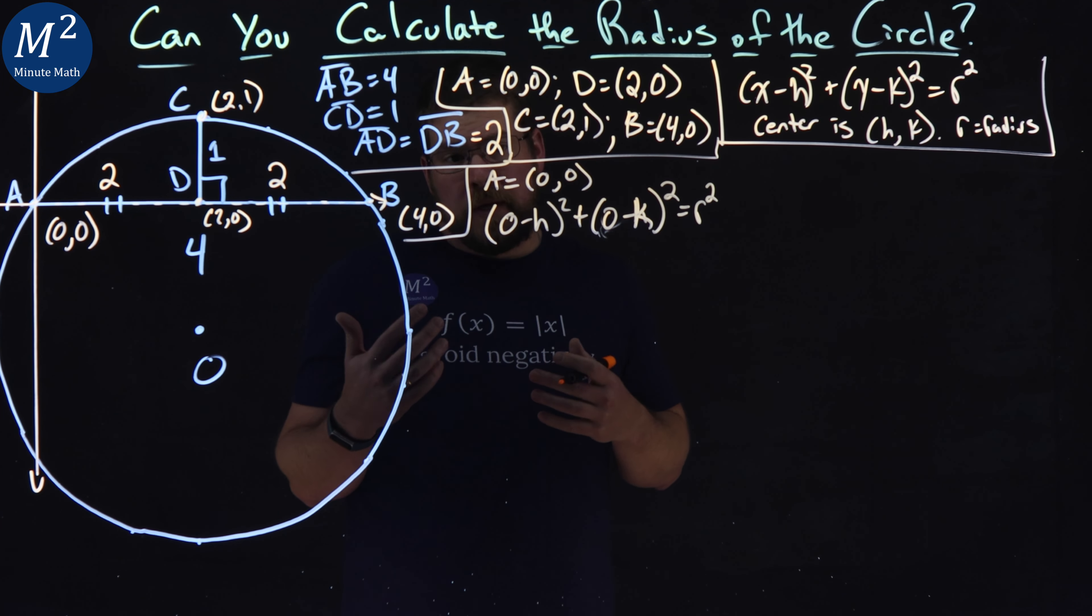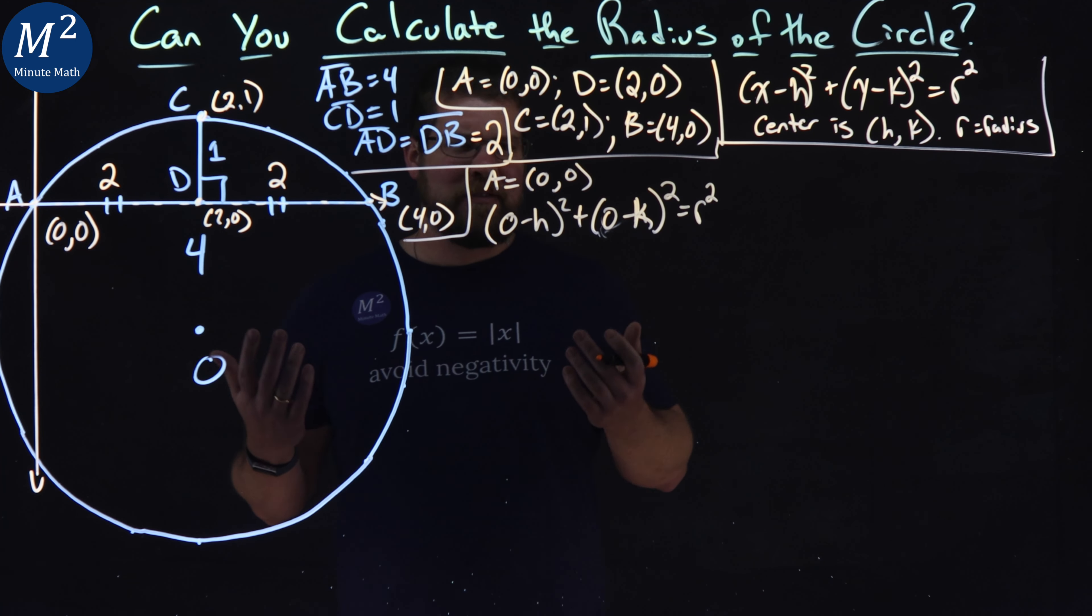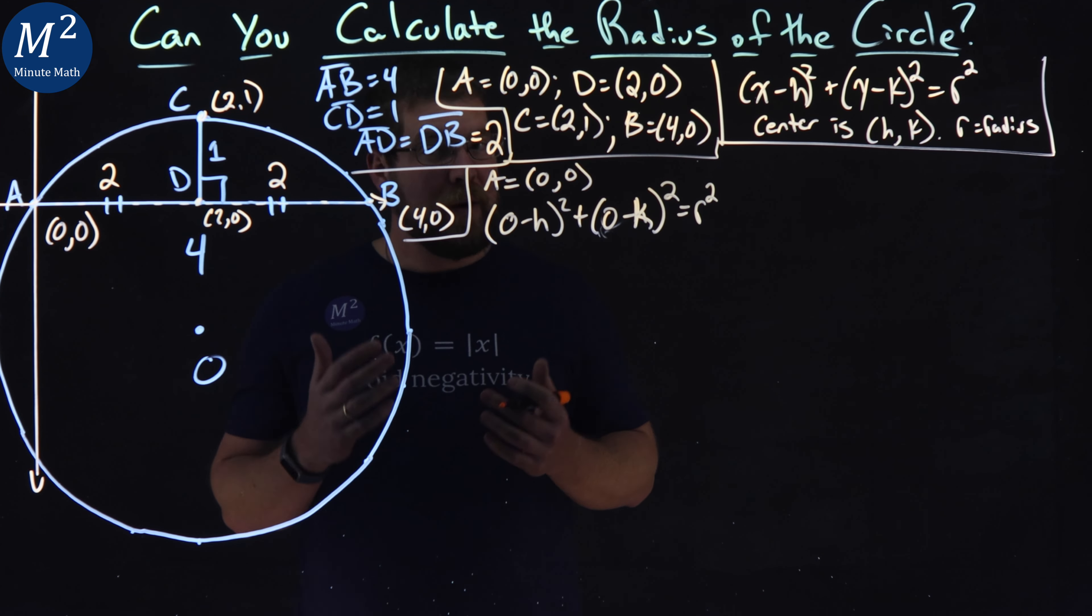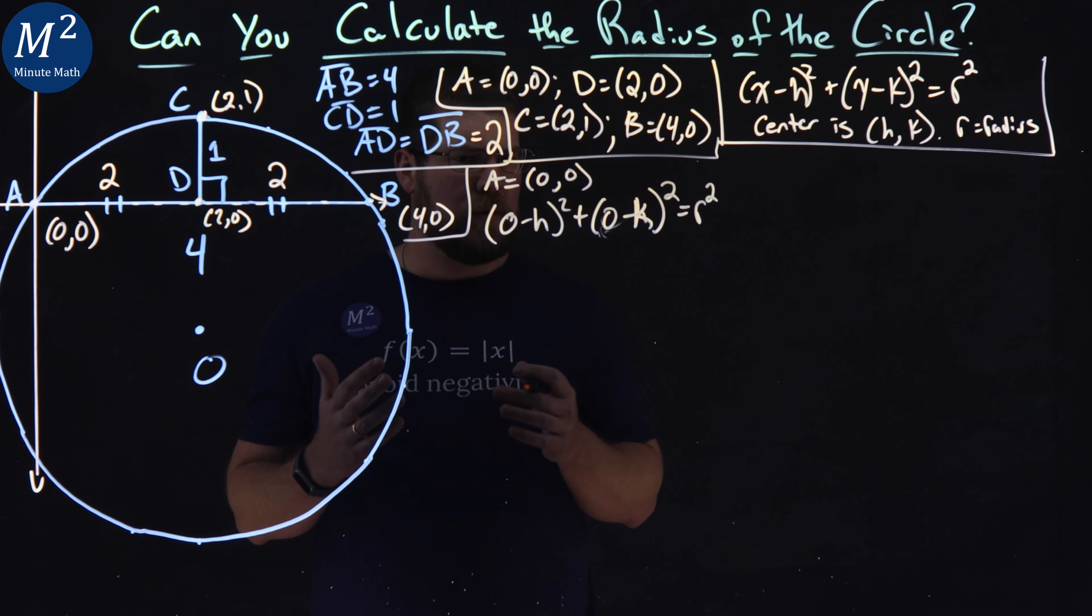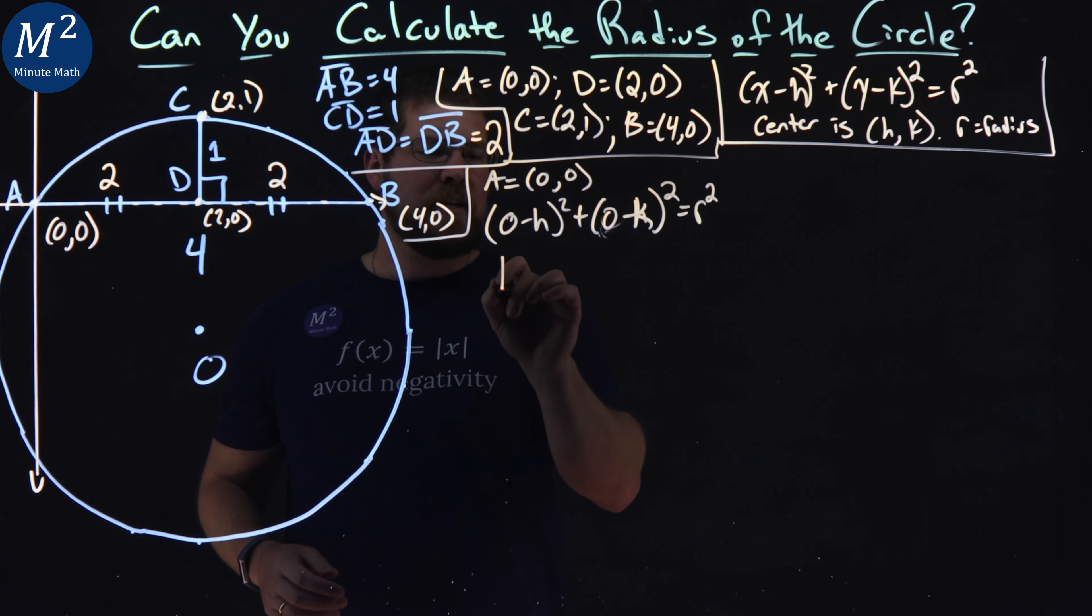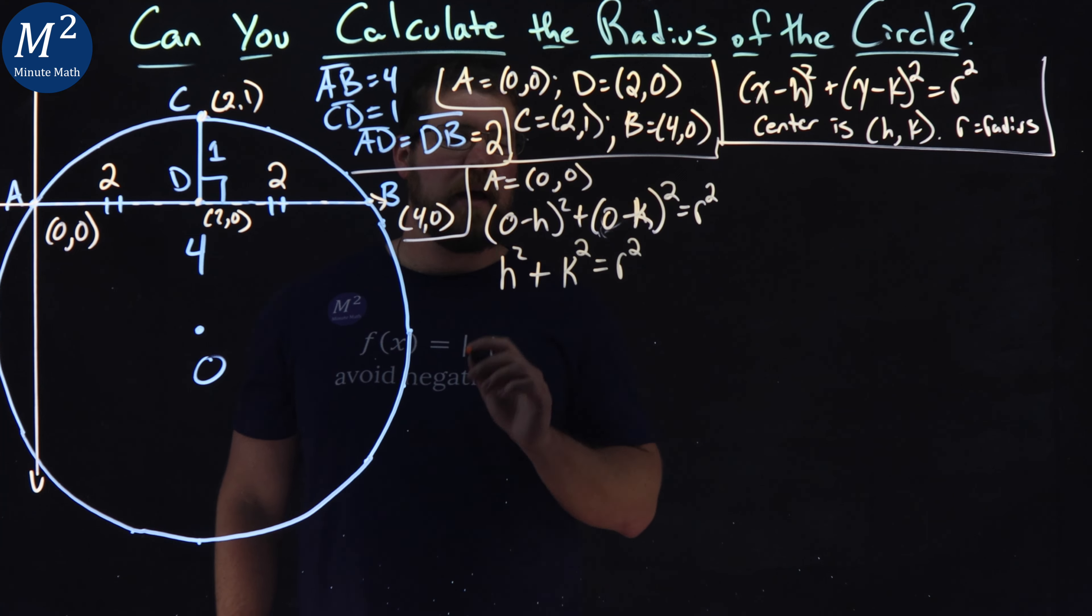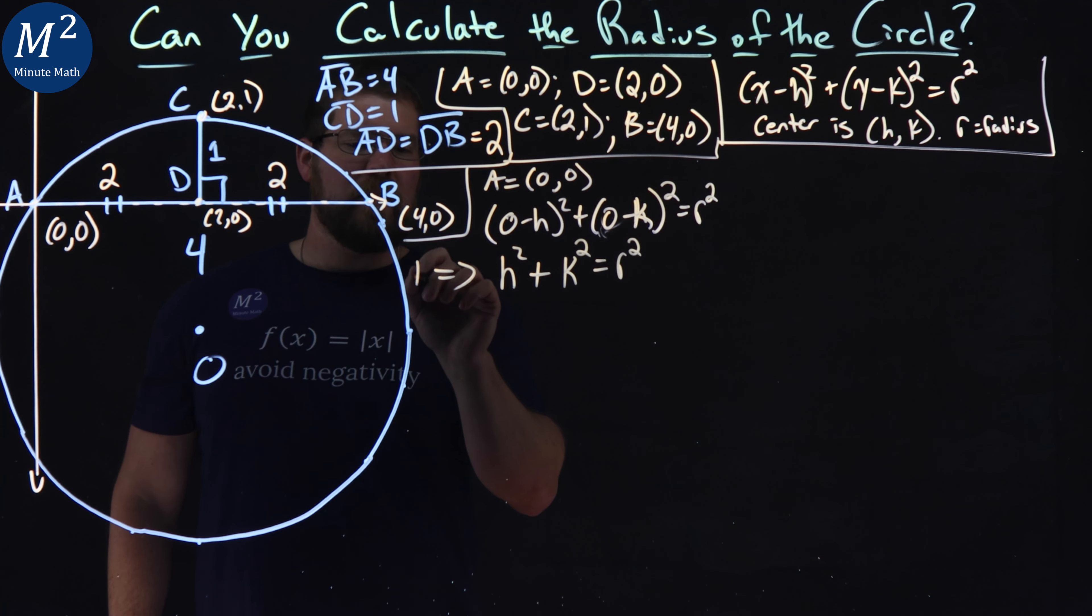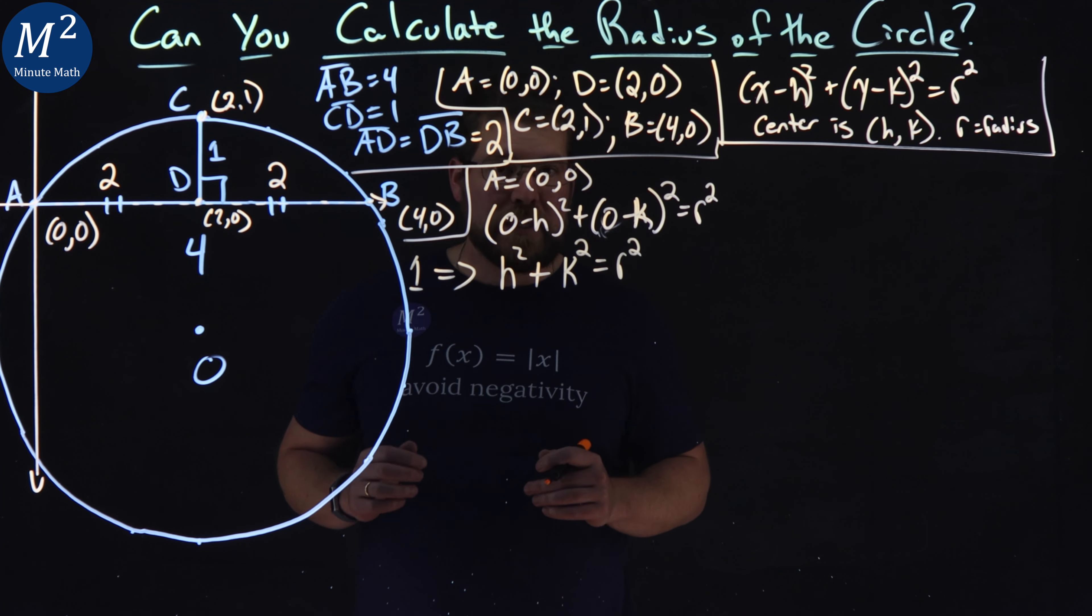Now zero minus H is negative H. But we know if we're squaring that, because a positive H squared. So really the negative doesn't really matter here. So H squared plus K squared is equal to R squared. That's a formula one, let's call it. We have our first equation.